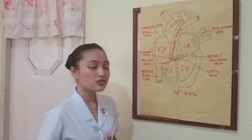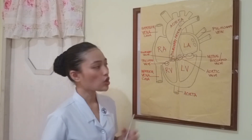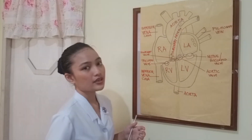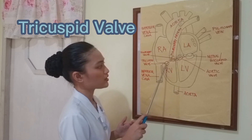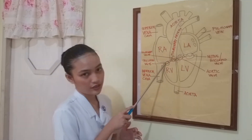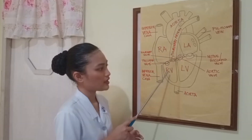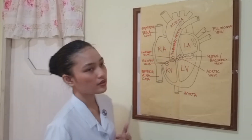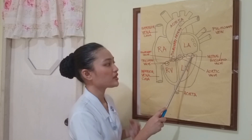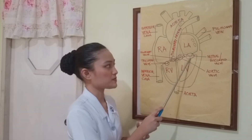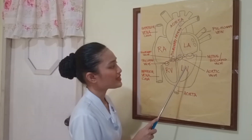The heart also has four valves. The first two valves are located in between the atrium and ventricles. First, we have the tricuspid valve, which is right here in between the right atrium and right ventricle. The second one is called the mitral valve, otherwise known as the bicuspid valve because it has two cusps. It is situated between the left atrium and the left ventricle.